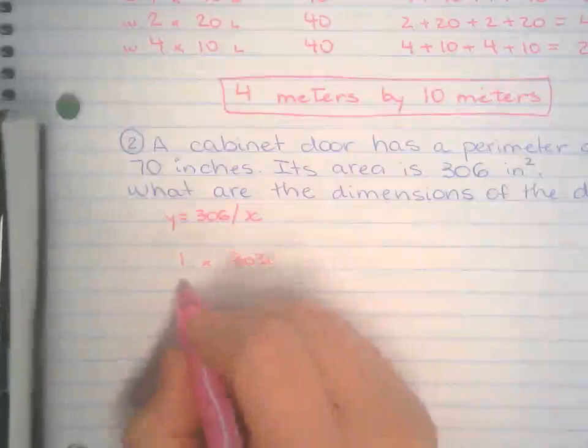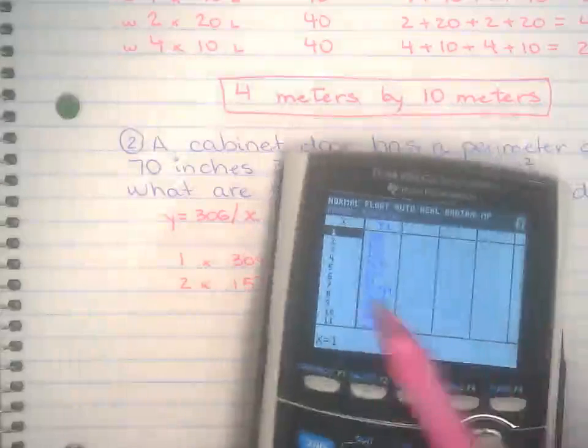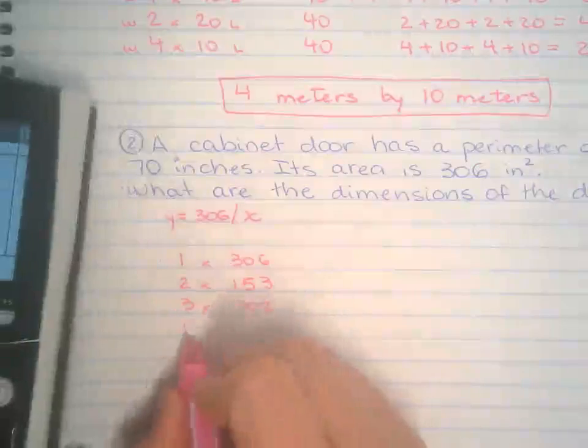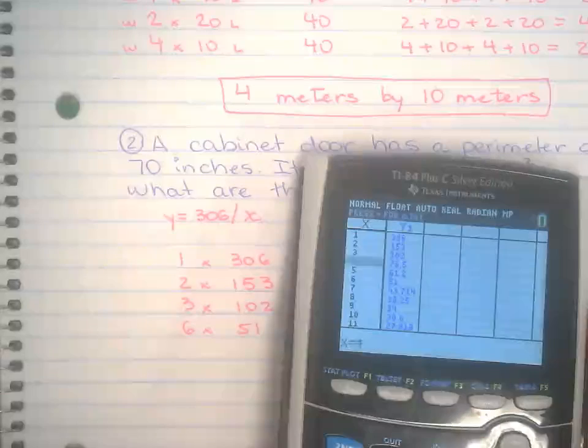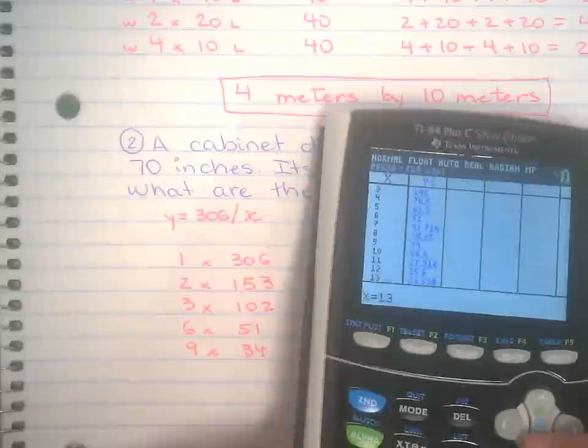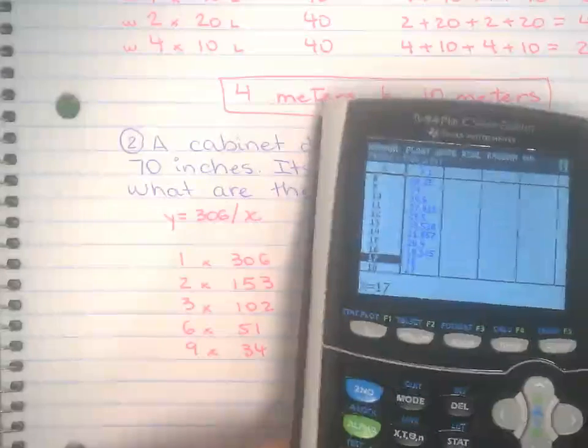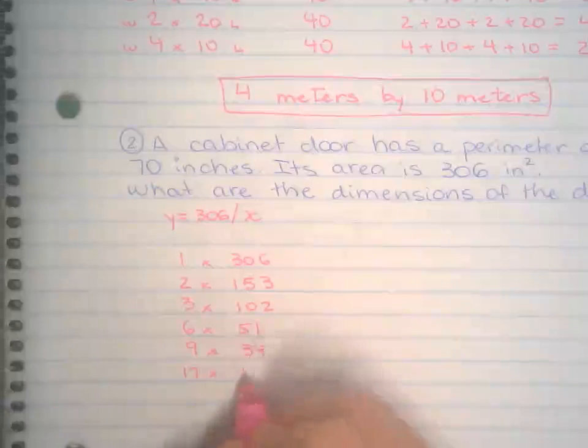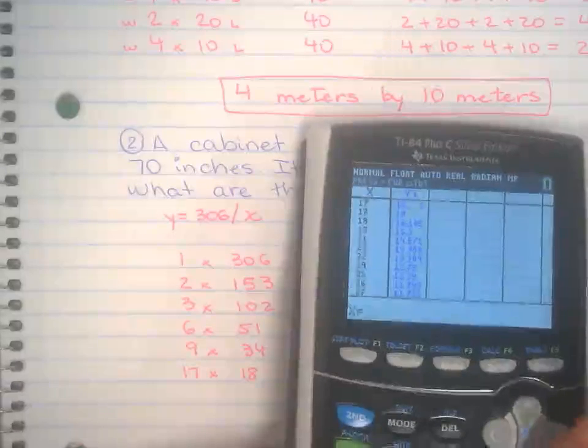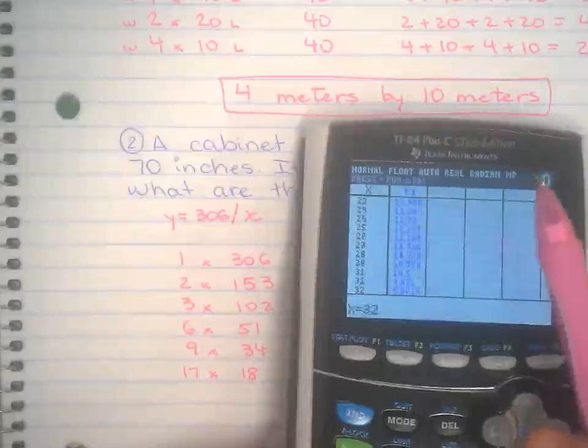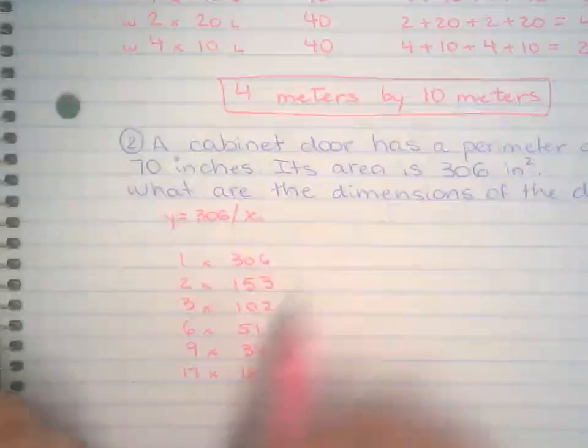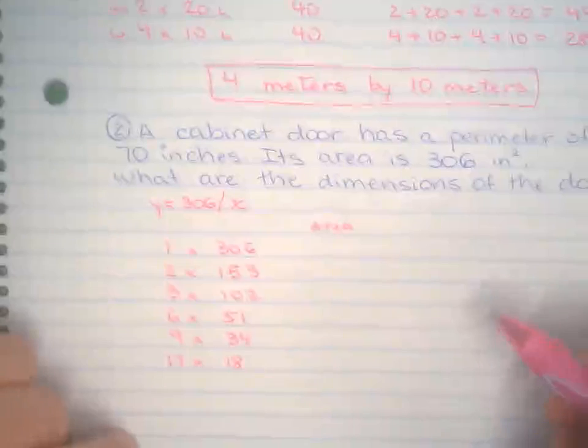1 and 306. 2 and 153. 3 and 102. Decimal, decimal, 6 and 51. 9 and 34. Aren't you glad I showed you this? And then there's one more, if you keep going all the way down here, that's also whole numbers. 17 and 18. And then it's the same thing, but backwards, which you know that if I multiply 34 times 9, I will definitely get the same thing. So I don't have to list them backwards. Just once, that's all you need. This is all my area that multiplies to 306.